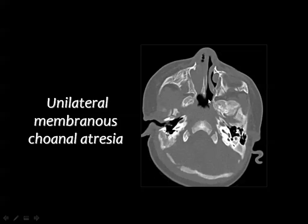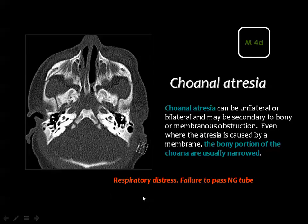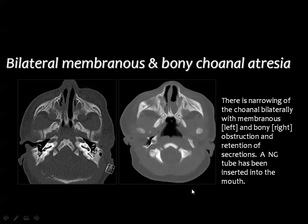This example shows a membranous type of atresia on the right side, with distension of the nasal cavity by secretions. Here you can see bilateral membranous atresia where the posterior choana is narrowed and a membrane is obstructing it posteriorly. These are two examples of bilateral osseous choanal atresia and bilateral membranous atresia in another patient.